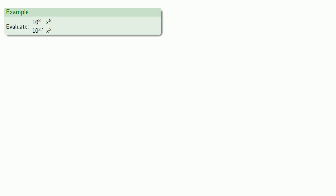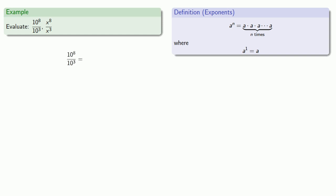So I can find the quotient 10 to the eighths over 10 to the third. And I really only need my definition of exponents. I have 8 factors of 10 in the numerator, 3 factors of 10 in the denominator, and those 3 will cancel out with the 3 in the numerator, leaving us with 8 minus 3, 5 factors of 10.